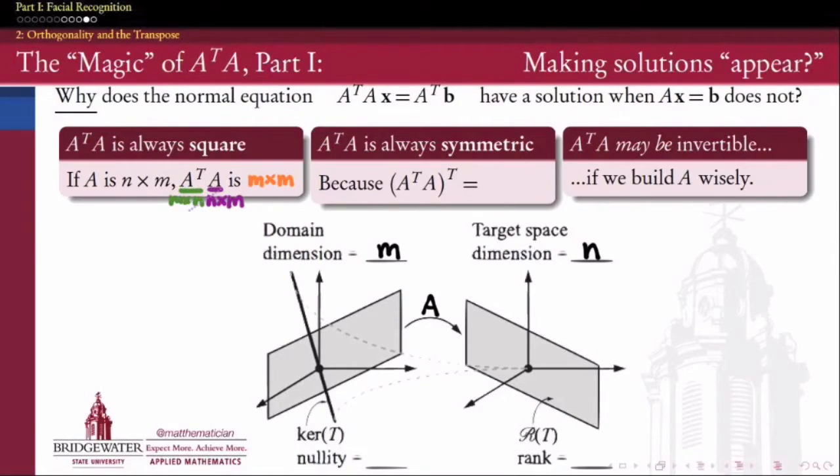A defines, if A is n by m, a linear transformation from R^m to R^n, as in this picture. But then A transpose defines a transformation going the other way, from R^n to R^m. And the result of the product, the matrix product A transpose A,